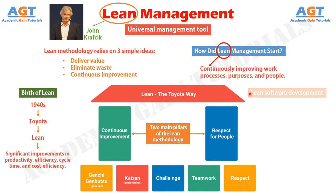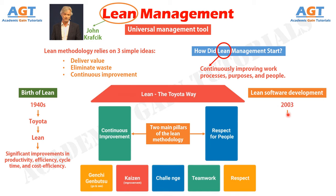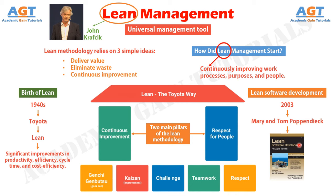In 2003, Mary and Tom Poppendieck published their book 'Lean Software Development: An Agile Toolkit.' The book describes how you can apply the initial principles of the lean methodology to software development. Lean software development comes down to seven principles. In the beginning it didn't gain popularity, but a few years later it became one of the most popular software development methods.